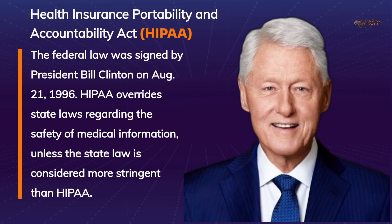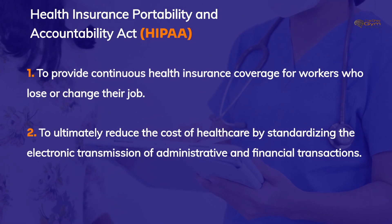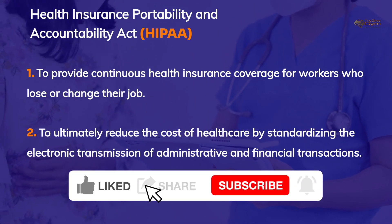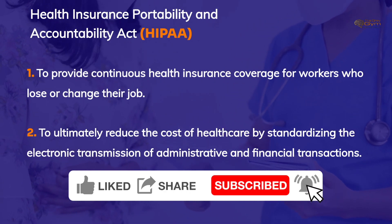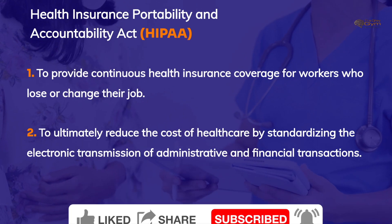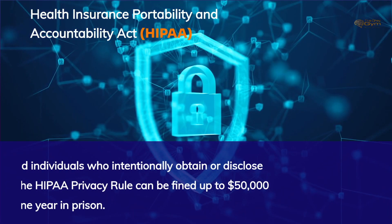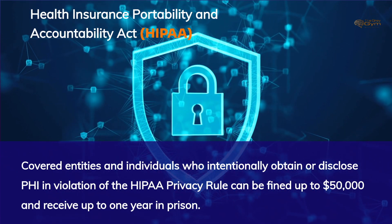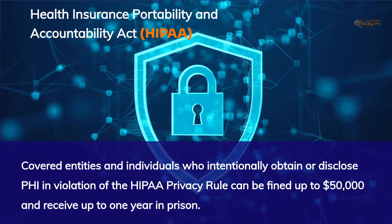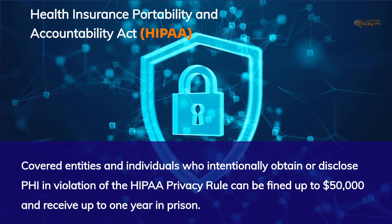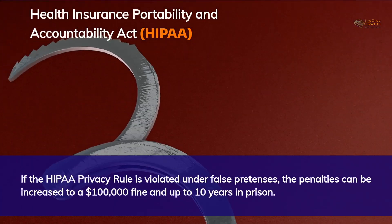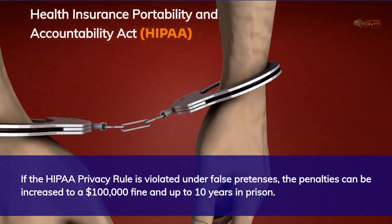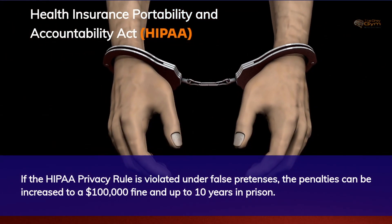HIPAA has two main purposes. One, to provide continuous health insurance coverage for workers who lose or change their job. Two, to ultimately reduce the cost of healthcare by standardizing the electronic transmission of administrative and financial transactions. Covered entities and individuals who intentionally obtain or disclose PHI in violation of the HIPAA privacy rule can be fined up to $50,000 and receive up to one year in prison. If the HIPAA privacy rule is violated under false pretenses, the penalties can be increased to a $100,000 fine and up to 10 years in prison.